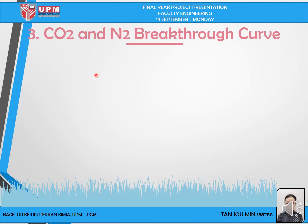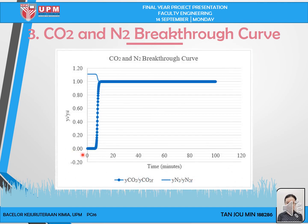For the third result, I will show the carbon dioxide and nitrogen breakthrough curves. The dotted blue line is the carbon dioxide breakthrough curve while the solid blue line is the nitrogen breakthrough curve. Nitrogen breaks through earlier compared to carbon dioxide because the linear driving force of nitrogen is much larger than that of carbon dioxide. The larger the linear driving force, the faster the gas component is absorbed to the adsorbent.